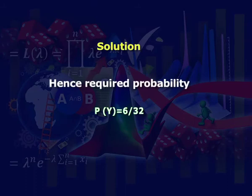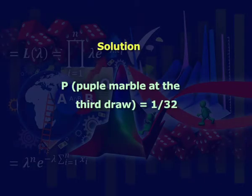As the experiment is done with replacement, there is no effect of the first draw on the outcome of the second draw. So the probability of getting a yellow marble at the second draw is the same as the probability of drawing yellow from the box: P(Y) = 6/32. (b) Similarly, probability of yellow at second draw regardless of first outcome = 6/32. (c) Probability of purple at the third draw = 1/32, same as the probability at the first draw.